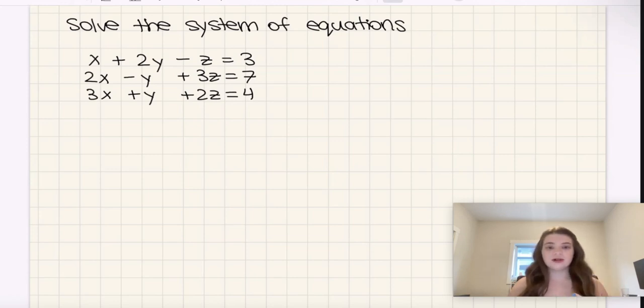Now there are three possible ways that these planes, that these three equations that represent planes could collide. They could collide at one specific point, meaning that there would be one unique solution.